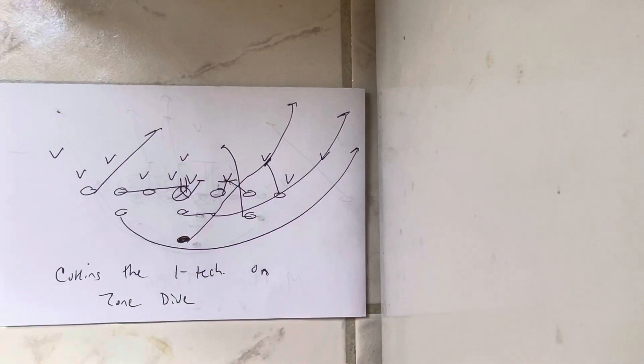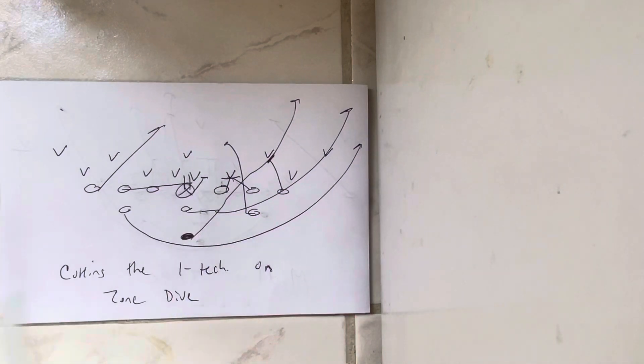So cutting the one technique on zone dive is something you certainly can do. The quarterback is going to snap the ball, and then he's going to step. And this is the only time this is going to happen. He's going to step at a 45, so he's going to get his shoulder turn here.